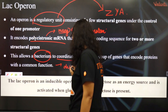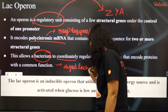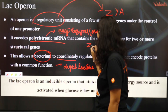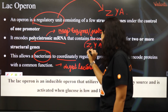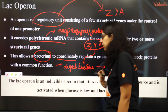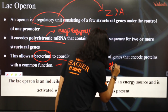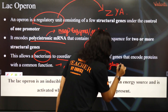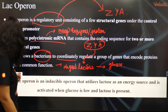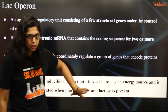It allows bacteria to coordinate and regulate with a common function. The common function is to digest the lactose. So these 3 genes, which we call ZYA, are functioning together to digest the lactose and give you glucose. That's the function. So lac operon is inducible, as the presence of lactose in the medium will switch the operon on.